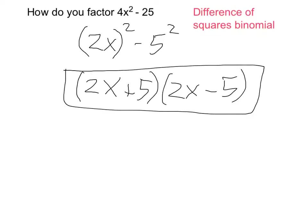I'm going to take another second to explain. We can see the reason this works when we FOIL. This times this equals 4x squared. This times this is going to equal negative 10x. And here's where the magic happens.